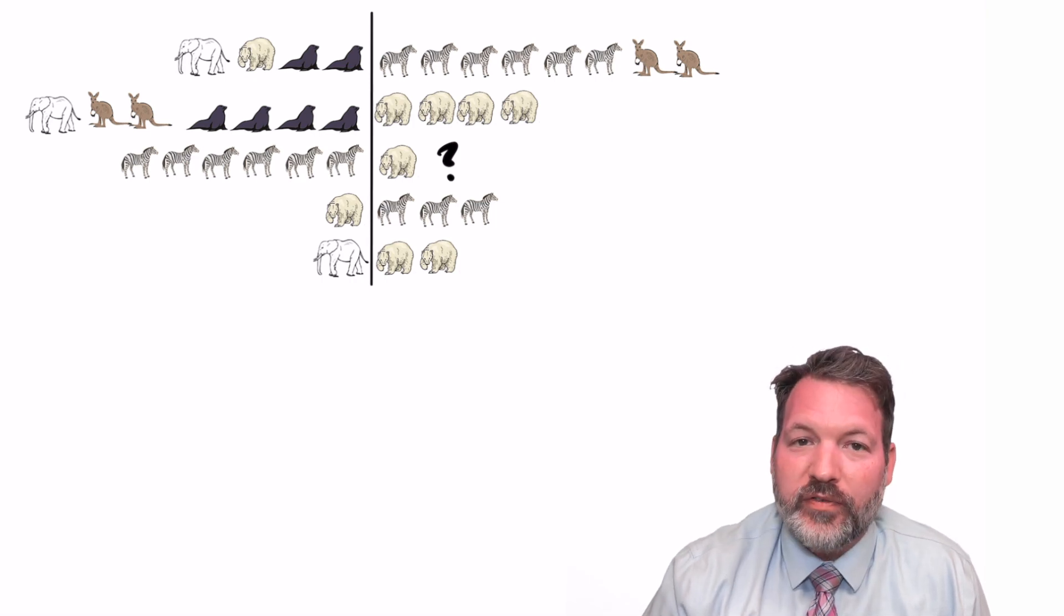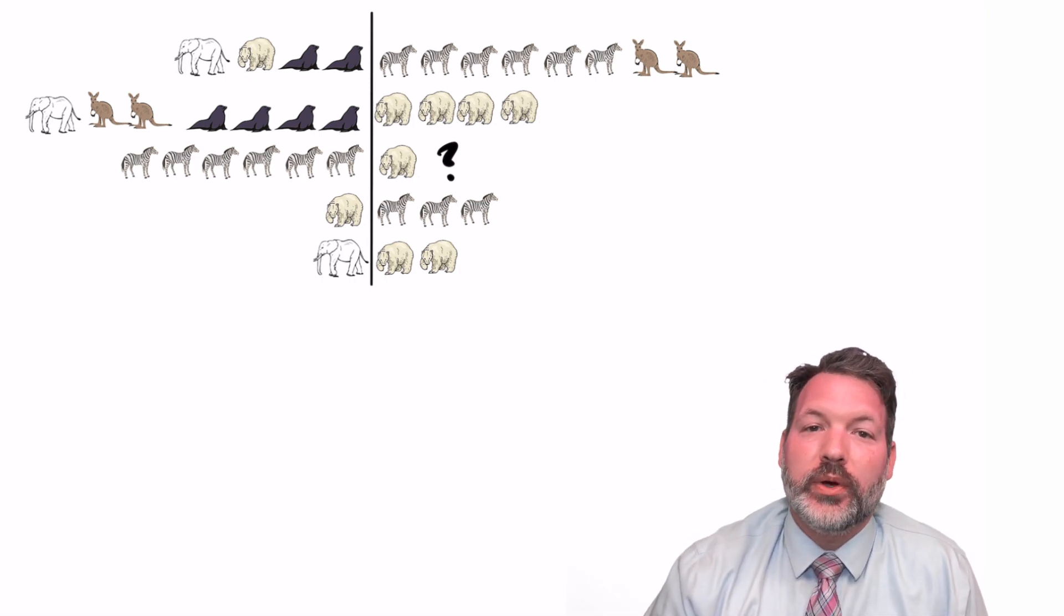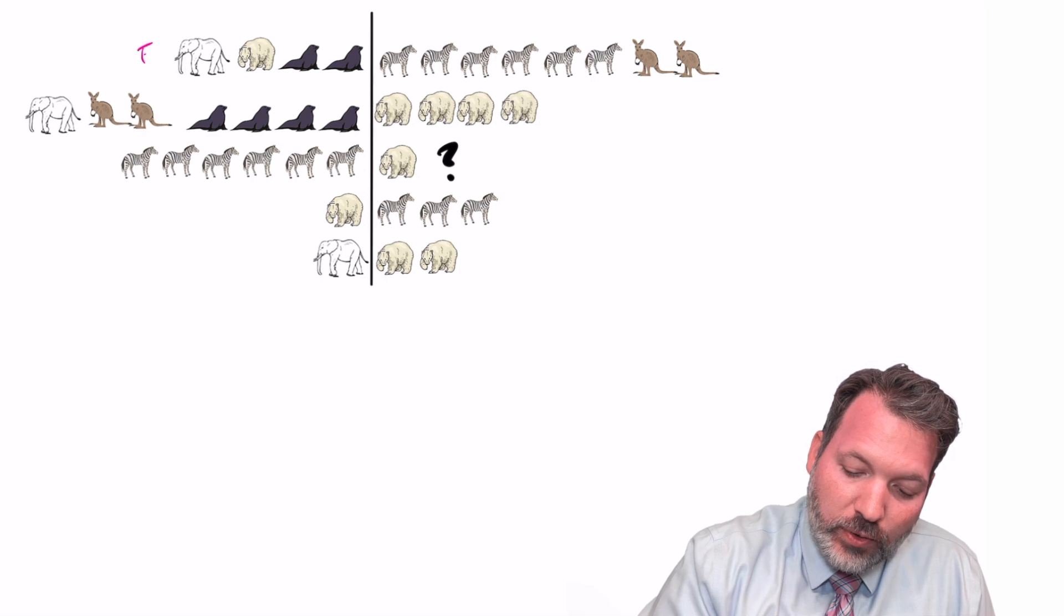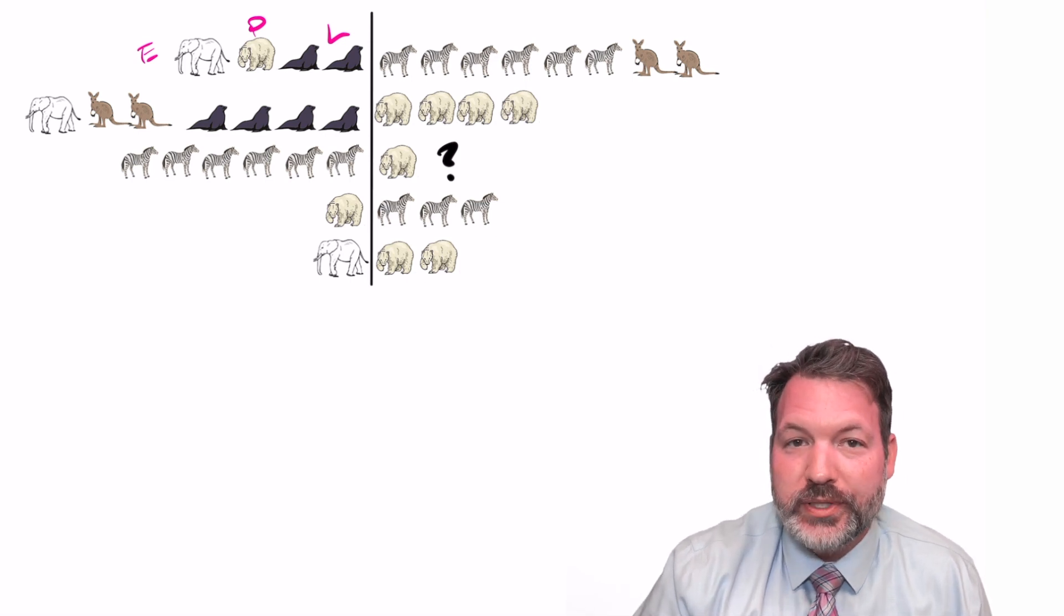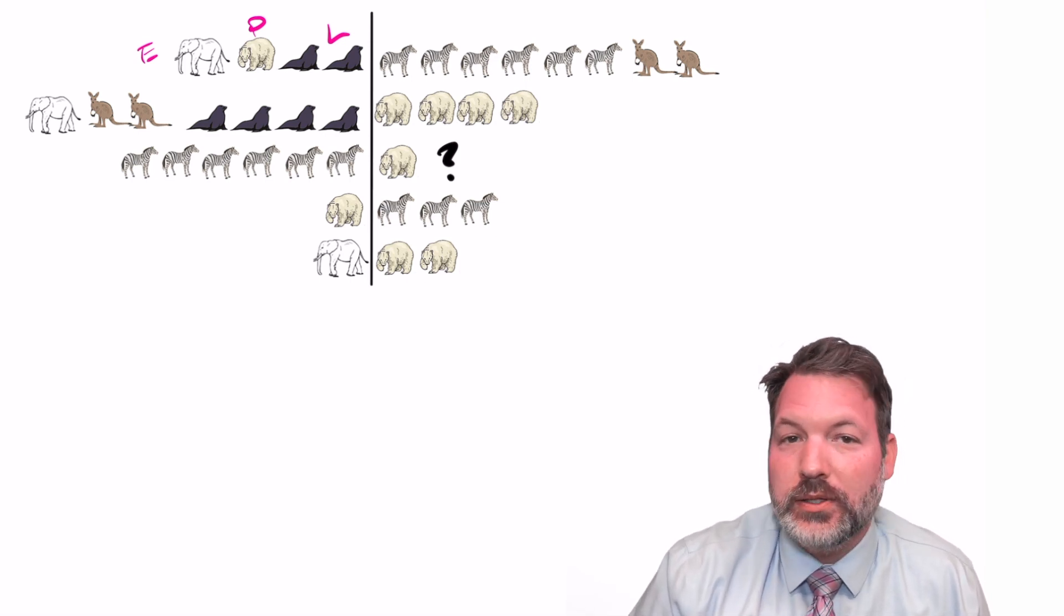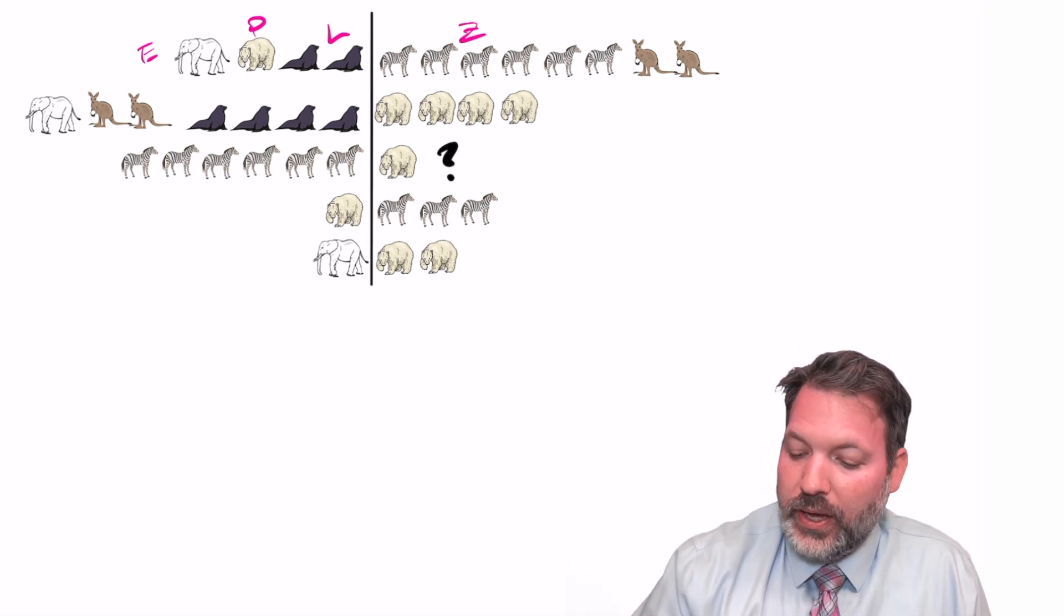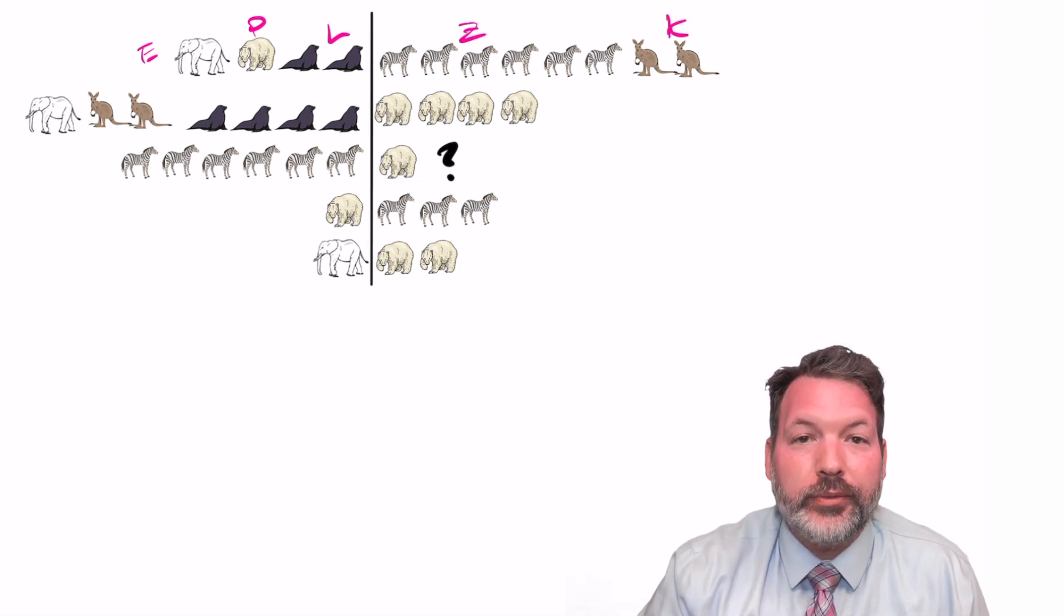We're going to represent each one of these animals with a symbol of some kind. Specifically, in the language of mathematics, we're going to represent them with variables. We can say E represents elephant, P represents polar bear. I'm going to go with L representing seals because my S's look like fives and I don't want this to get any more confusing than it has to be. Z for zebra and then K for kangaroo.